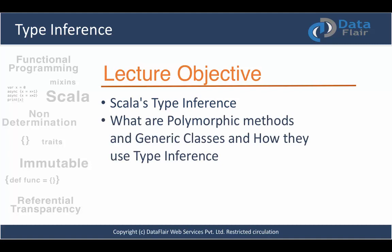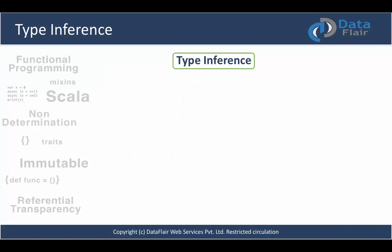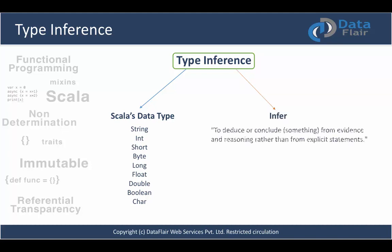The first topic is type inference. This is a composite word made out of two root words: 'type' and 'infer.' With 'type' we mean Scala's basic data types such as string, int, short, byte, long, and all those data types available in Scala. 'Infer' means to draw a conclusion from evidence and reasoning rather than from explicit statements. So when you define a string value, you don't have to tell Scala what type it is — the Scala compiler has the capability to infer the type for you.